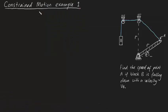G'day guys, in this video I'll be solving for you a constrained motion example problem. Let's consider the situation just here, where we've got this rod, and at the tip of this rod lies a point A, which connects to a rope wrapped around a few pulleys towards this block B. We've been asked, find the speed of point A if block B is falling down with a velocity VB.